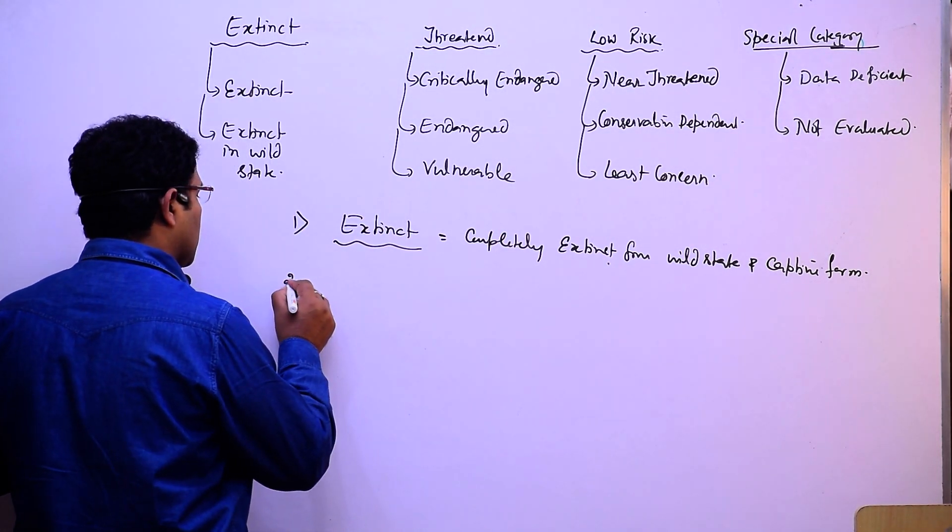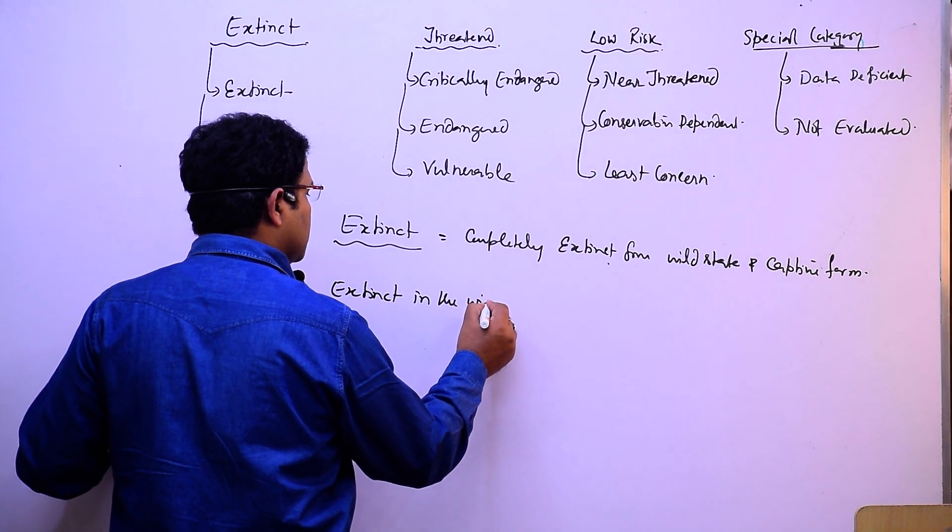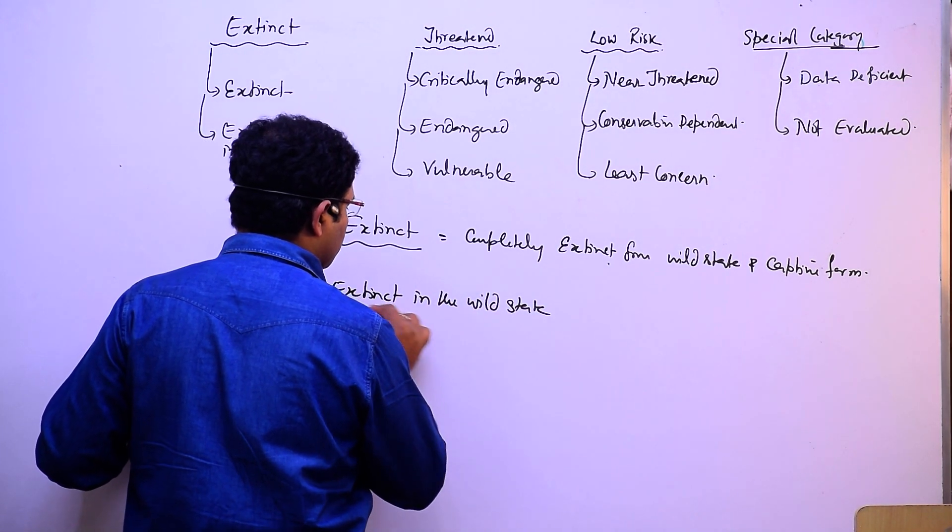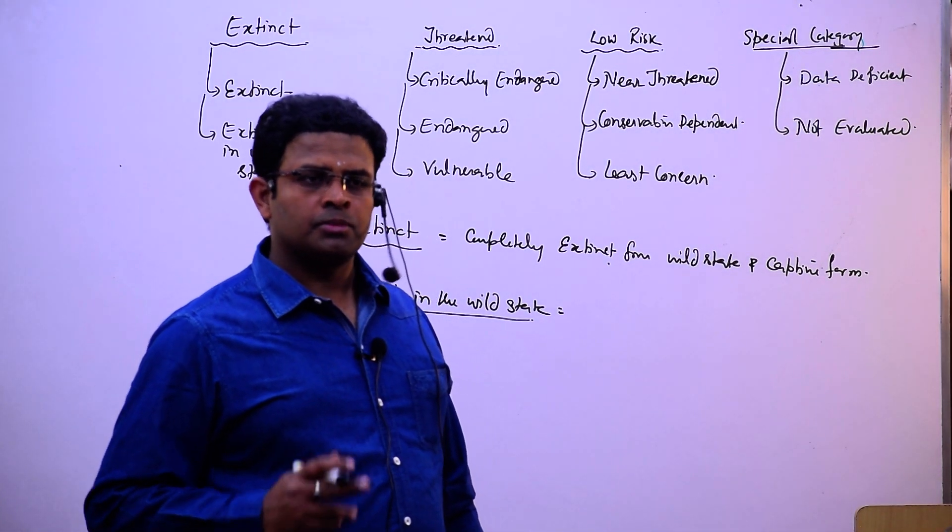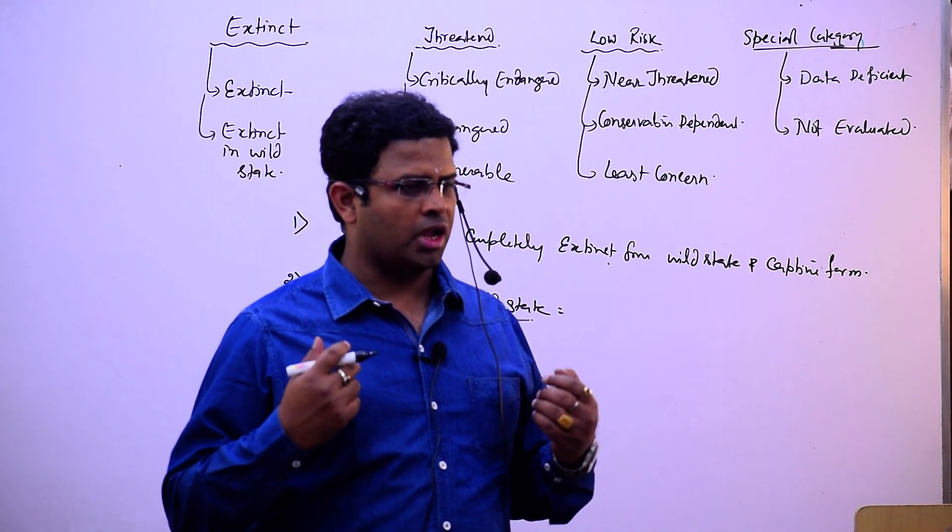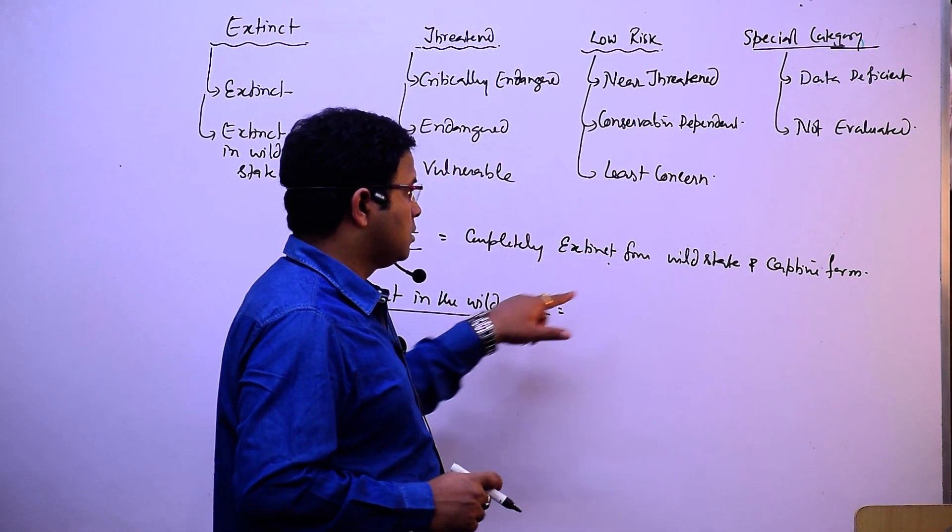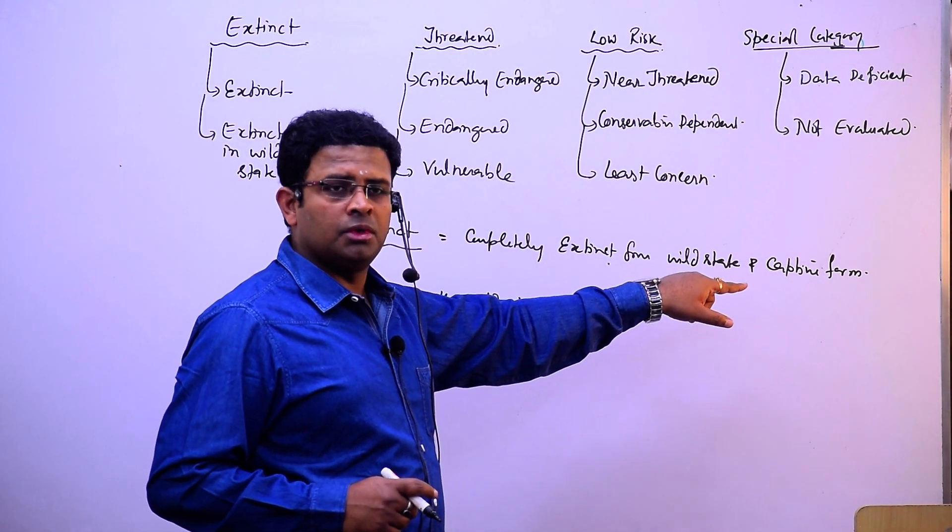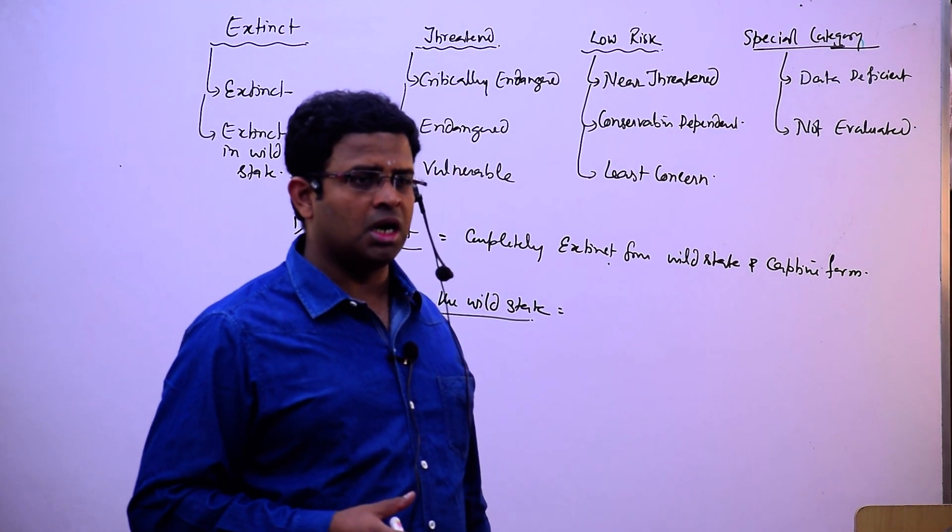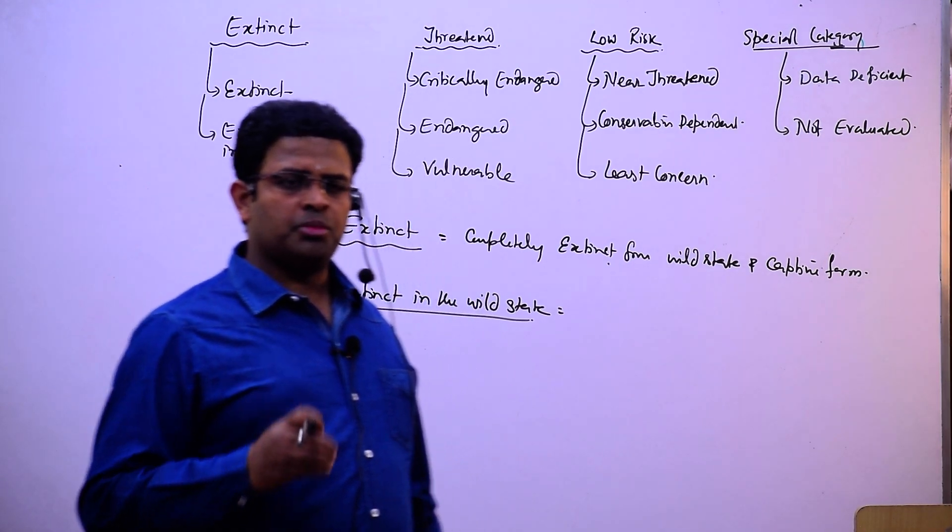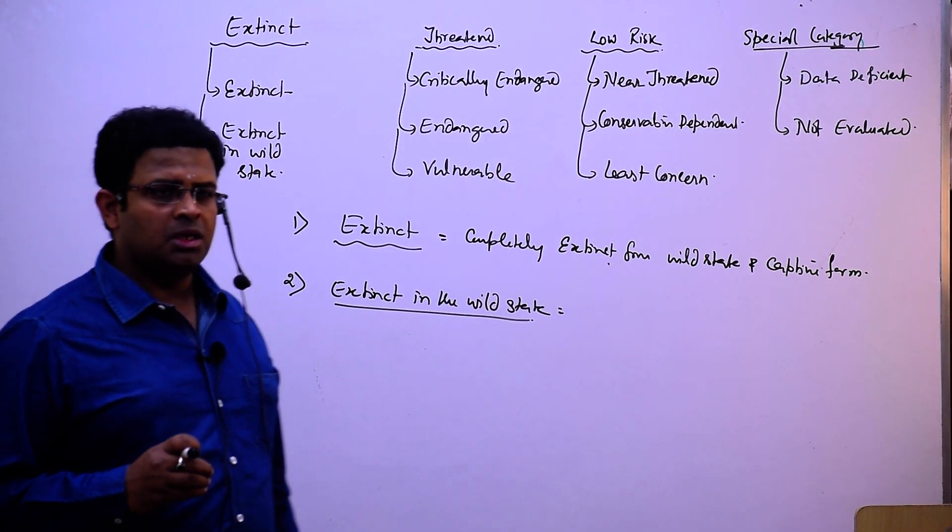Second one is extinct in the wild state. What is the meaning of wild state? It has been finished from the forest, from the national parks, from the wildlife sanctuaries, from any kind of forest. But it is available in captive form - somewhere captured, somewhere in botanical garden, somewhere in zoological garden, somewhere we are trying to preserve it. So we have seen extinct and extinct in the wild state.